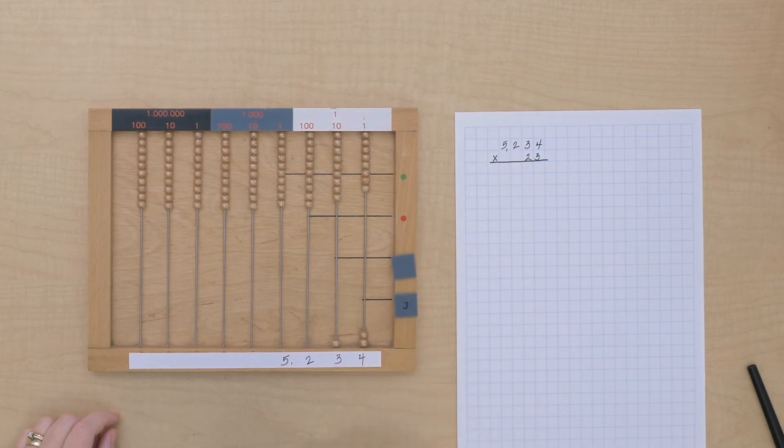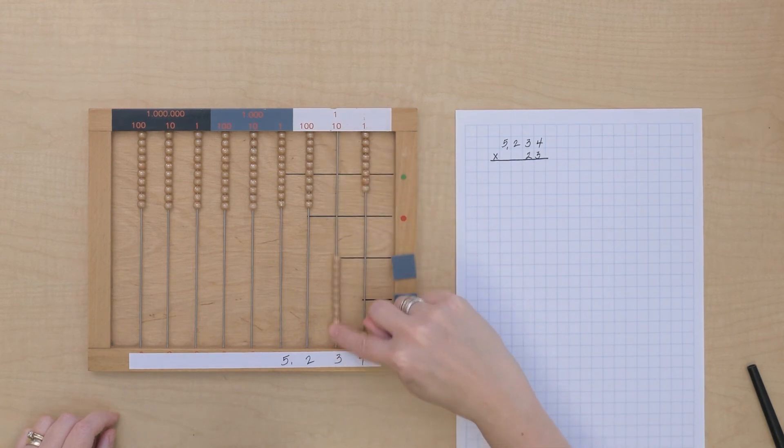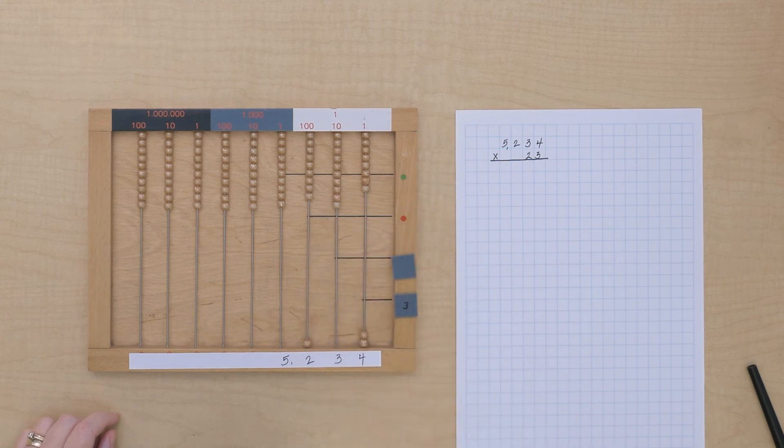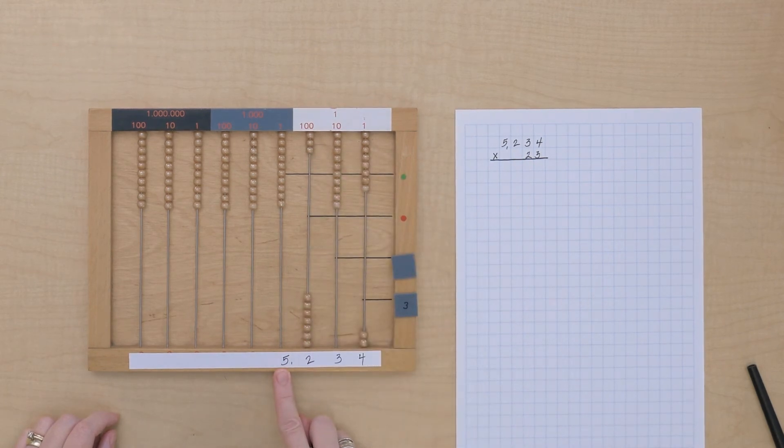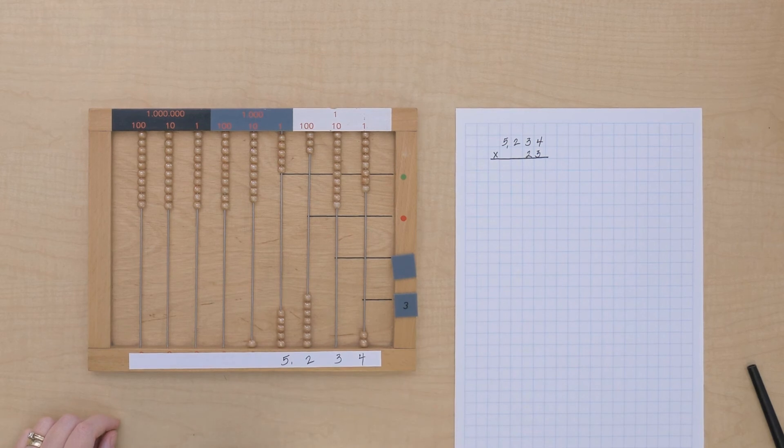Now 3 tens times 3 is going to give us 9... 7, 8, 9. When I get 10 on this frame, I exchange for the next category. 2 hundreds times 3, that'll be 6 hundreds. 5 thousands times 3, that's 15,000. So there's my 15,000. Okay, we've done our units multiplier.